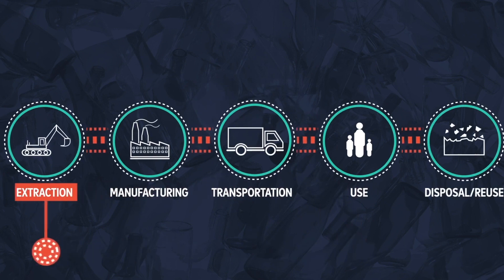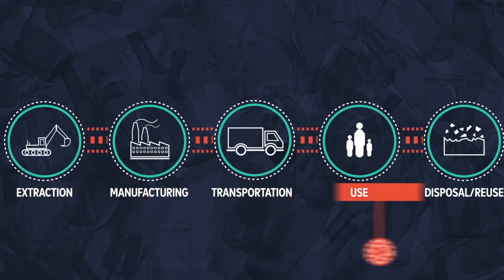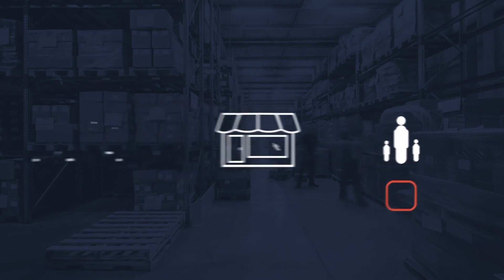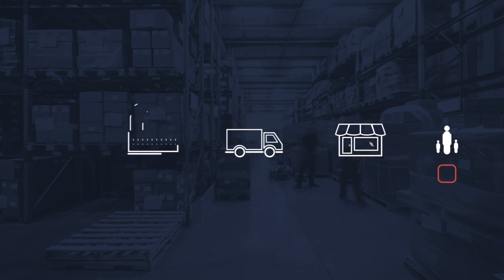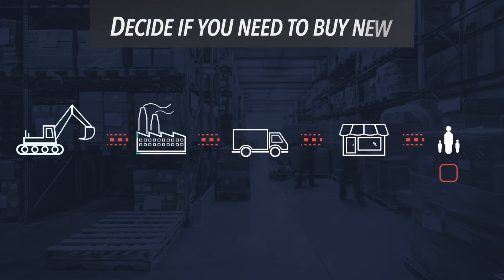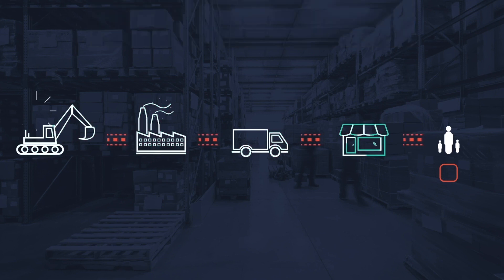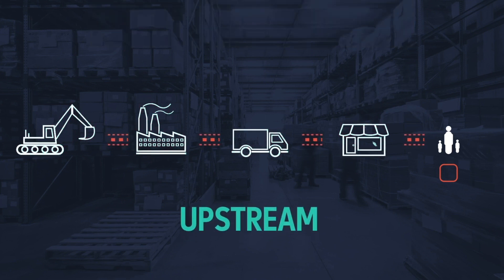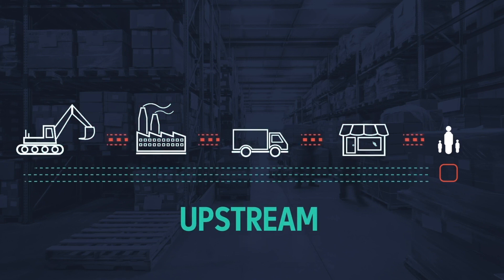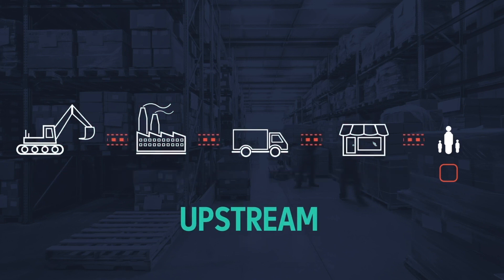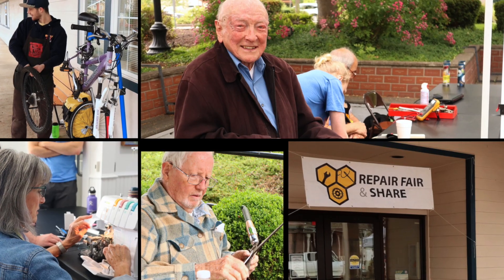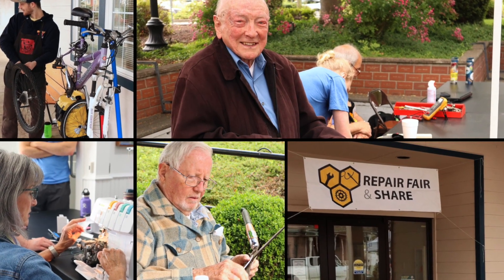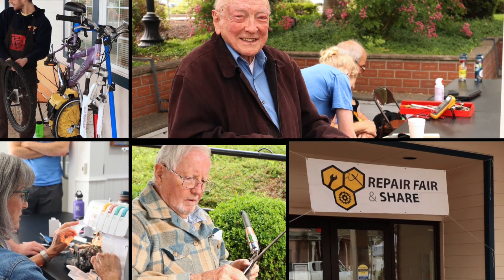This process is obviously very complicated, and we buy a lot of things. Let's focus on what you can do to think critically as a consumer. Tip one: decide if you need to buy new. Some of the heaviest environmental impacts come from the production side of creating an item. If you can repair an item you have or buy one second hand instead of new, you prevent those impacts while still getting what you need. Marion County regularly hosts repair fairs, which are free community events to connect people with broken items to people who can fix them.